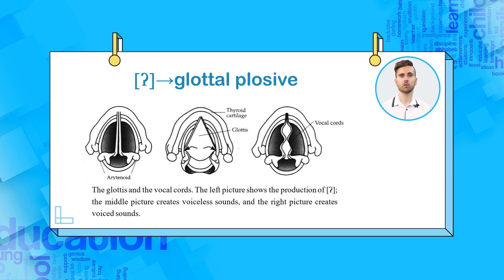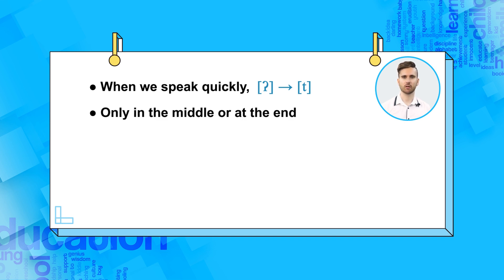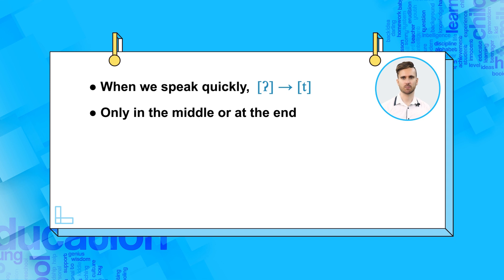To make the glottal plosive, the vocal cords completely close and then completely reopen. You can see this in the image on the screen, along with the position of the vocal cords for voiced and voiceless sounds. When we speak quickly, we can use this sound instead of T. However, it is impossible to say this sound on its own, and it is never at the beginning of a word — only in the middle or at the end. It sounds strange when used in a single isolated word, but in a long, flowing conversation spoken quickly, it is very natural to use this sound many times.